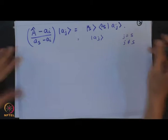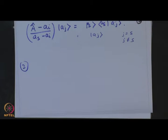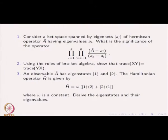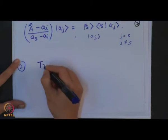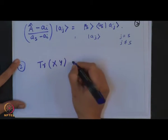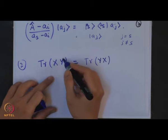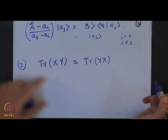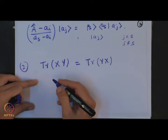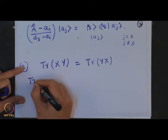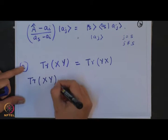In Problem 2, this is an exercise to get hands-on practice with bra-ket notation. You have to use bra-ket notation to prove that the trace of XY equals the trace of YX. The trace is basically the sum of the diagonal elements.